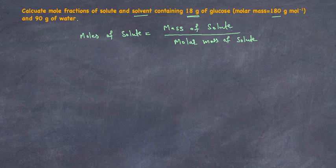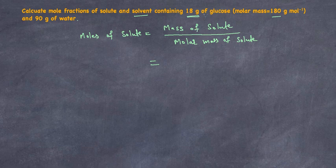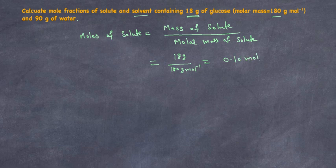The solute is the component present in lesser quantity in a solution, and the solvent is the component present in greater quantity. So the moles of glucose equals 18 grams divided by 180 grams per mole, which gives 0.10 moles. That's the number of moles of glucose. Similarly, we can calculate the moles of the solvent, which is water.